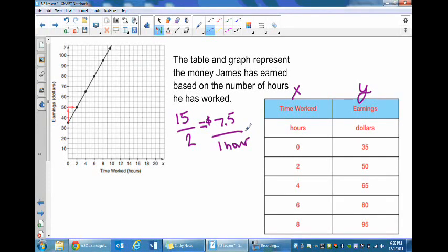We can look at the table and find out the same thing. Our y goes from 35 to 50, there's a difference of 15. Goes from 50 to 65, difference of 15. 65 to 80, each of these has a difference of 15. On the x side of the table we go from 0 to 2, 2 to 4, each one goes up by 2.